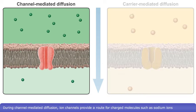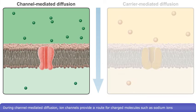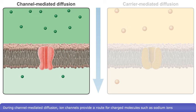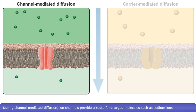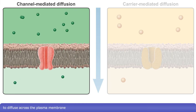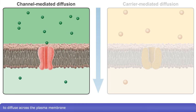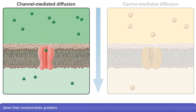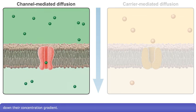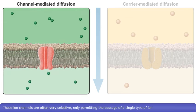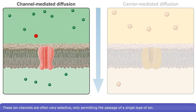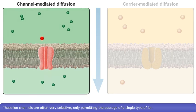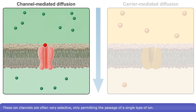During channel-mediated diffusion, ion channels provide a route for charged molecules such as sodium ions to diffuse across the plasma membrane, down their concentration gradient. These ion channels are often very selective, only permitting the passage of a single type of ion.